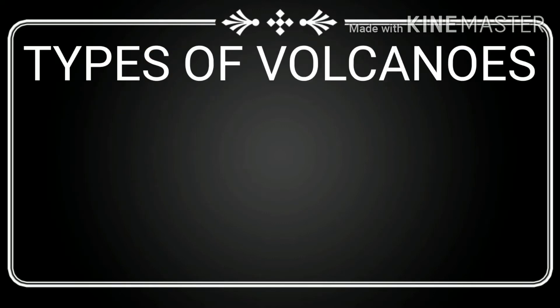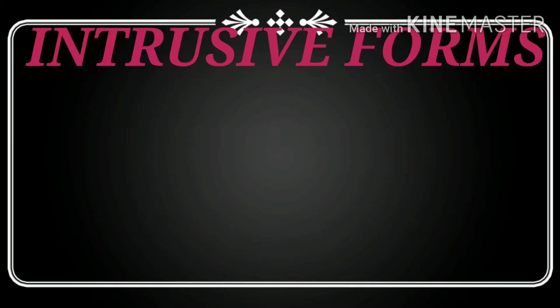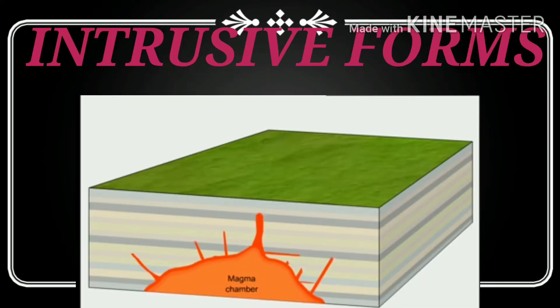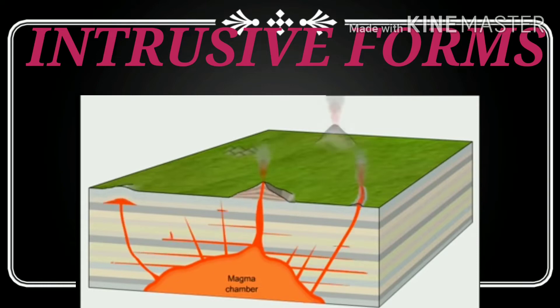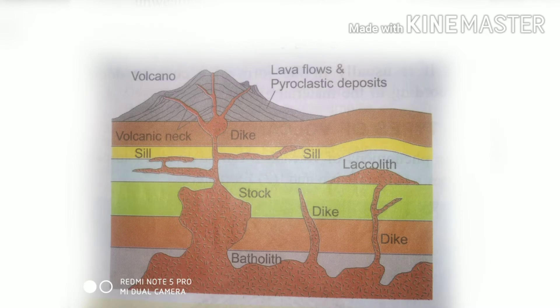Types of Volcanoes: the phenomena of volcanism can be divided into two types — intrusive and extrusive. Intrusive type of landform occurs when lava solidifies within the earth's crust and gives rise to various shapes and forms. In extrusive type of landforms, the lava comes out of the earth's crust and solidifies into various shapes and forms. The most important intrusive forms include batholith, lacolith, sills, dykes, lopoliths and facoliths.